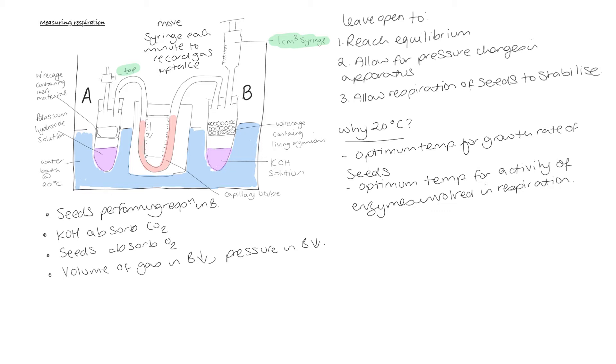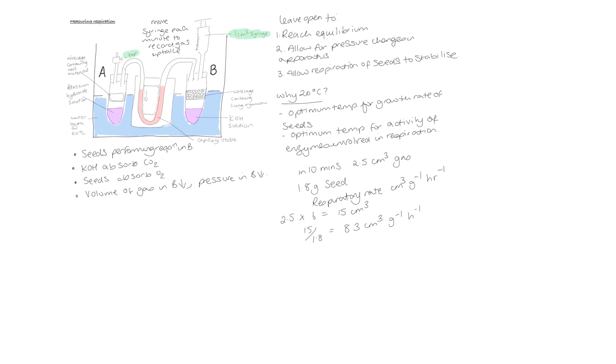So let's imagine that after completing this for 10 minutes, we calculated that in 10 minutes, 2.5 centimetres cubed of gas had been removed from the system. And we had put into tube B 1.8 grams of seeds. And you have been asked to calculate the rate of respiration in centimetres cubed per gram per hour. So the first thing we would do is we would have to scale that 2.5 centimetres cubed in 10 minutes up to an hour. So we would times 2.5 by 6. And it would give us 15 centimetres cubed of gas in 1.8 grams of seeds per hour. But we need to turn that into 1 gram of seeds. So we would do 15 divided by 1.8. And that would give us 8.3 centimetres cubed of gas per gram per hour. If you were asked to calculate it per minute, we would just divide it by 10 at the very beginning instead of timesing it by 6. Always make sure you check the units.